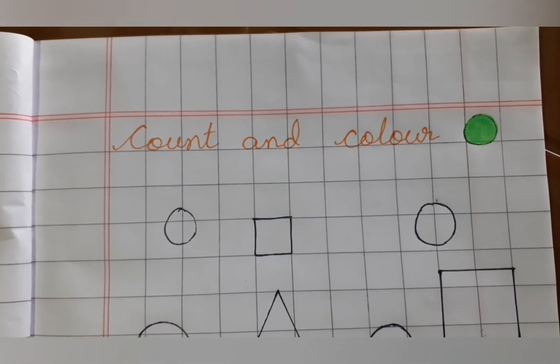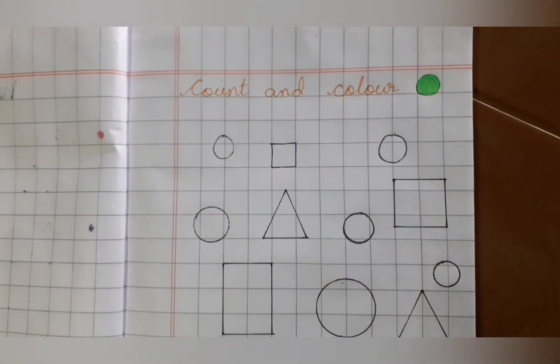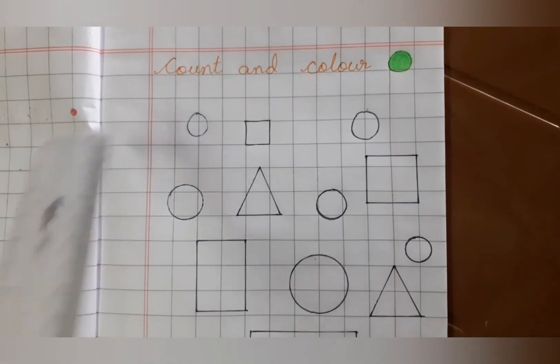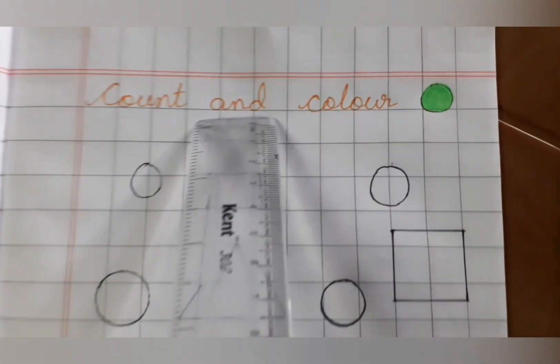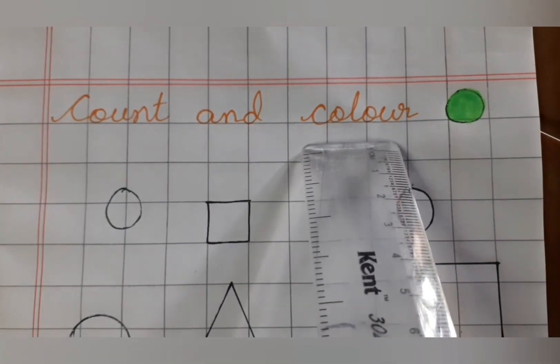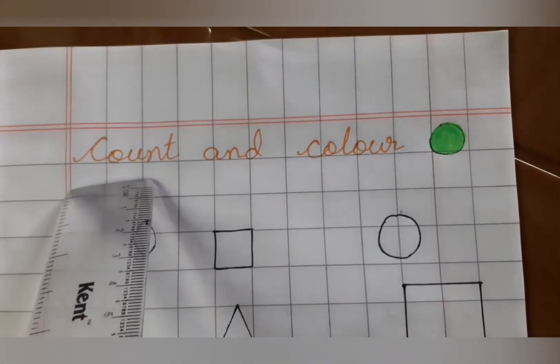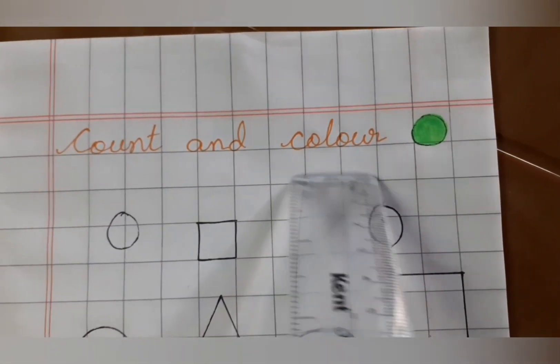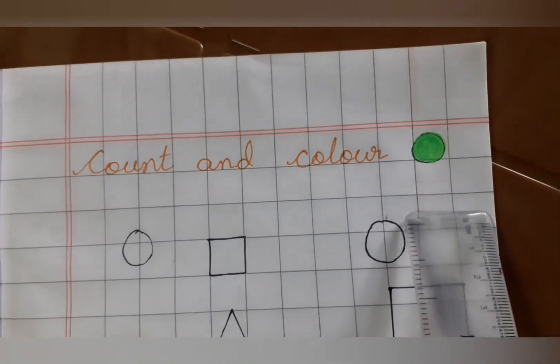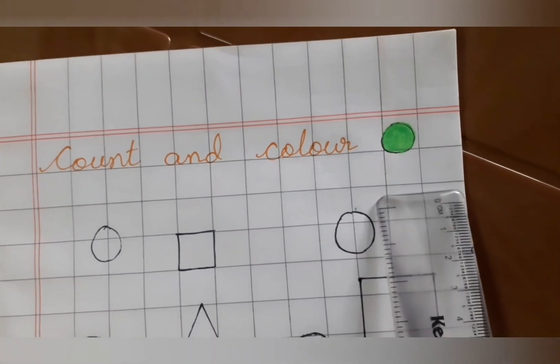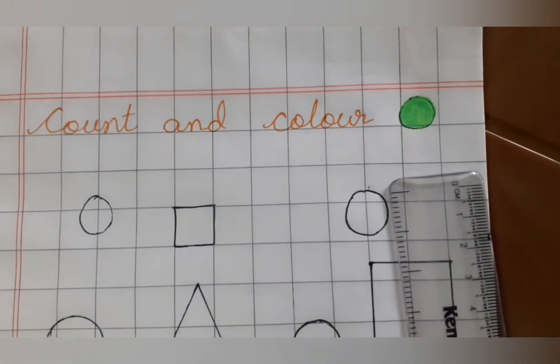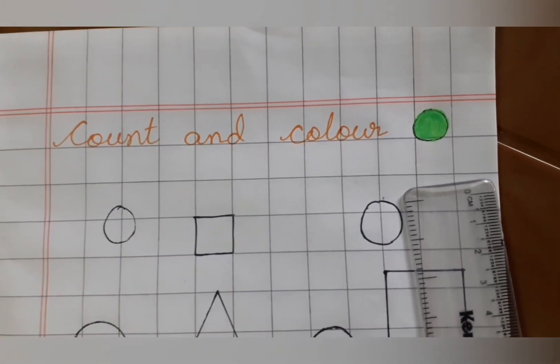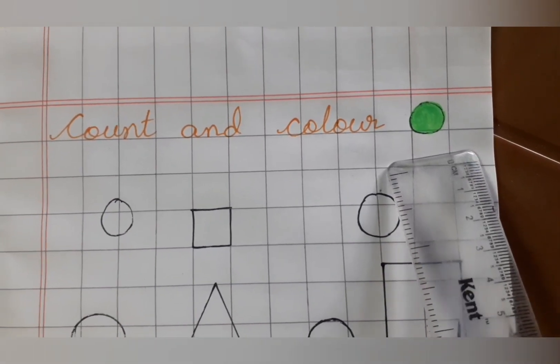So, this is another page. You can see C-O-U-N-T, count, A-N-T, and C-O-L-O-U-R, color. Count and color, what is the shape? Circle. So, you will find circle in this page. Let us say you can find five, six, seven circles here, okay?